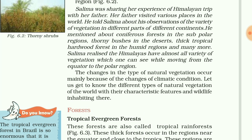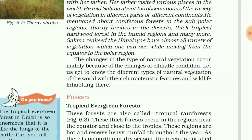Salima realized the Himalayas have almost all variety of vegetation, which one can see while moving from the equator to the polar region. The change in the type of natural vegetation from equator to pole is mainly because of the change in climatic conditions.